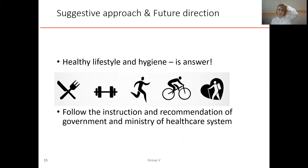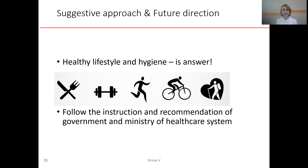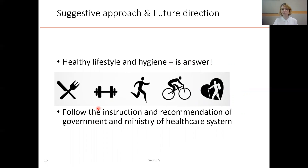After all of this information, what are the key highlights? What is the suggested approach and future direction for improving mortality outcomes for future pandemics? We can highlight two main points. Basically, a healthy lifestyle and good hygiene are the most important factors, along with following the instructions and recommendations of the government and the ministry of healthcare.